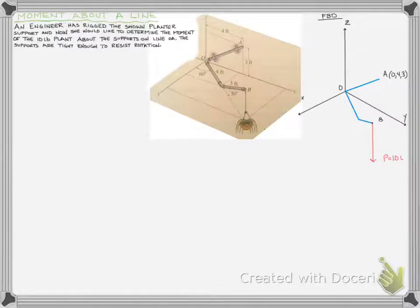Welcome to our review video about how to find a moment about a line using vector notation. What we have here is a very quickly rigged planter hanger using pipes and some pipe brackets to carry a 10-pound planter. The engineer that did this now wants to go back and see what the actual moment she's causing around line AO is, where the pipes are attached to the wall. For this particular problem, it's just the moment caused by the planter that we care about. We're going to neglect the weight of these weightless pipes just to solve this problem neatly.